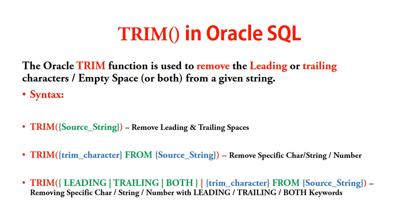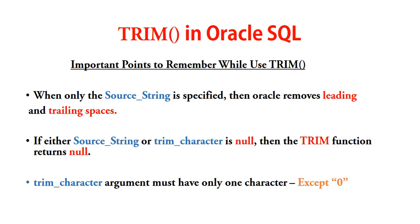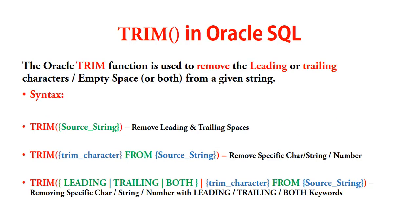The third syntax handles removal of a specific character using a specific keyword. If we specify LEADING, it will remove from the beginning of the string. If we specify TRAILING, it will consider the end of the string. If we specify BOTH, it will consider both the beginning and end. When only the source string is specified, Oracle removes leading and trailing spaces — this is syntax 1.